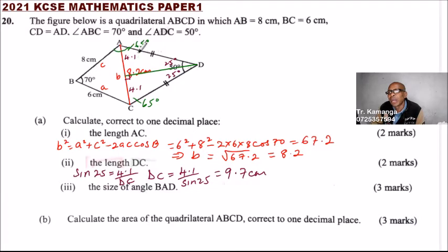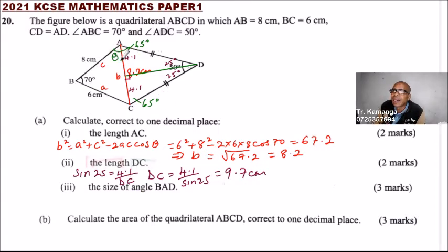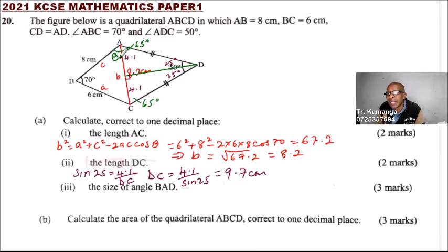So 130 plus 50 adds up to 180, which is correct. What we need is this angle theta, so that we add it to 65 to get the full angle BAD. We use the sine rule — we have 6 here, 8 here, AC = 8.2, and angle 70.